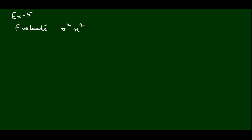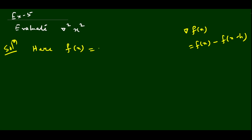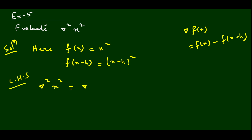Now let's take a problem related to the backward difference operator. We compute nabla² x². The formula is nabla f(x) = f(x) − f(x−h). Here f(x) = x², so f(x−h) = (x−h)². We write nabla² x² = nabla · (nabla x²).